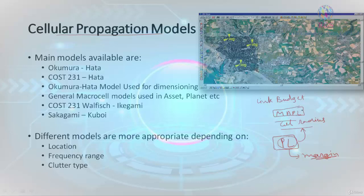That maximum allowable path loss will not be encountered all the time. There could be river bodies, vegetations, and hilly areas as well. When RF is transmitting, these factors are going to play a very important role.